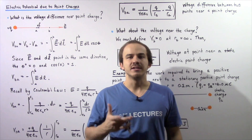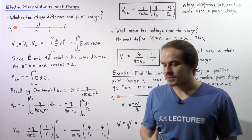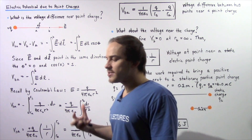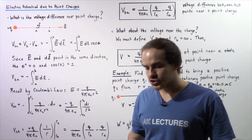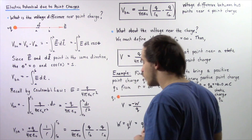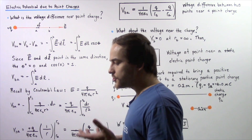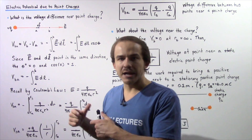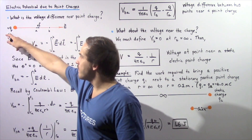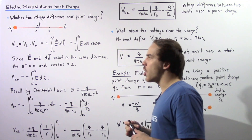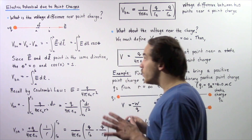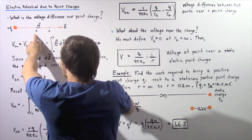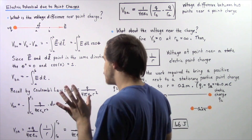Let's continue our discussion on electric potential and electric potential difference. In this lecture, we're going to examine electric potential as a result of a single stationary point charge. We want to calculate what the voltage difference is between some point A and some point B next to a positive stationary point charge Q.